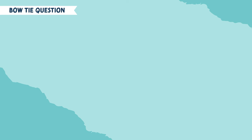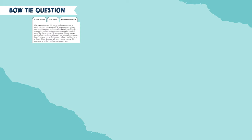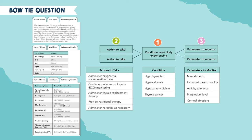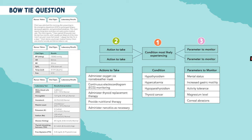Let's talk about bowtie questions. For bowtie questions, you're given information about a client — maybe through nurse's notes, admission notes, lab values, or vital signs. From there, you need to choose one condition the patient is most likely experiencing. So based on all those findings, what condition do you think the patient is experiencing? Then you need to choose two actions to take and two parameters to monitor. That's a quick overview of a bowtie question.